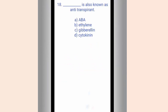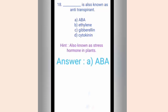Question eighteen. Dash is also known as antitranspirant. The options are A. ABA, B. Ethylene, C. Gibberlin, D. Cytokinin. The hint is it is also called stress hormone in plants. The correct answer is option A, ABA. Application of a minute quantity of ABA to leaves reduces transpiration to a greater extent through partial closure of stomata, thus conserving water.